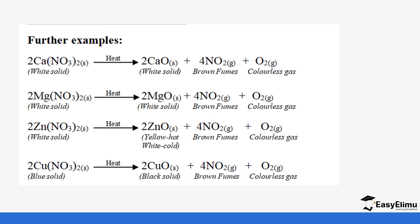Other metal nitrates in the same group include calcium nitrate, which when heated forms calcium oxide, nitrogen dioxide, and oxygen. Magnesium nitrate when heated also forms magnesium oxide, nitrogen dioxide, and oxygen. Zinc nitrate forms zinc oxide, nitrogen dioxide, and oxygen. Copper(II) nitrate also forms copper oxide, nitrogen dioxide, and oxygen.